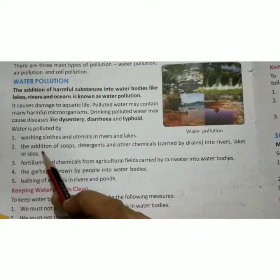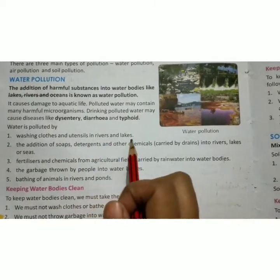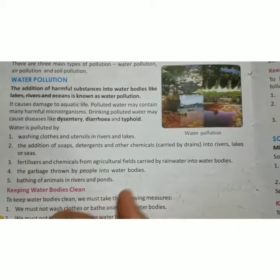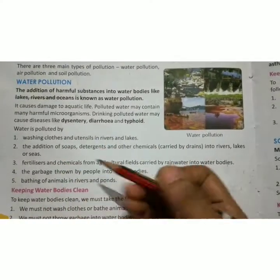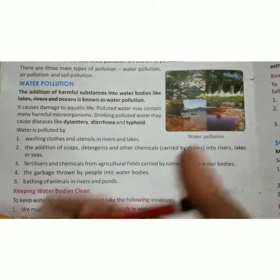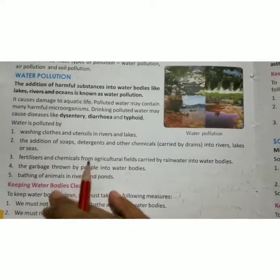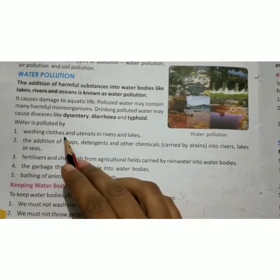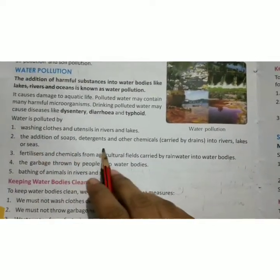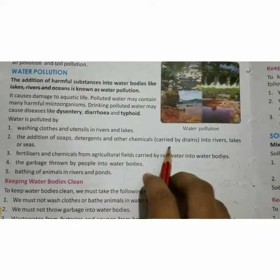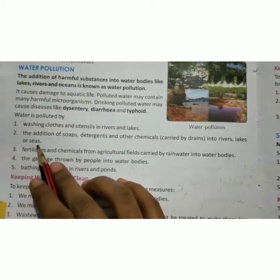Water is polluted by: first, washing clothes and utensils in rivers and lakes; next, the addition of soaps, detergents and other chemicals carried by drains into rivers, lakes and seas.